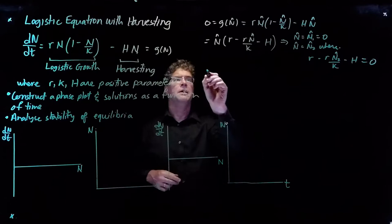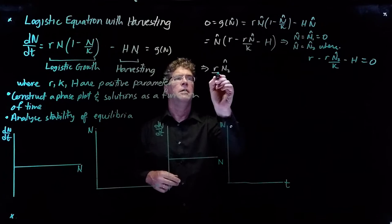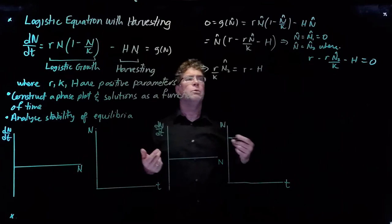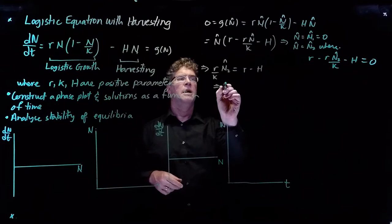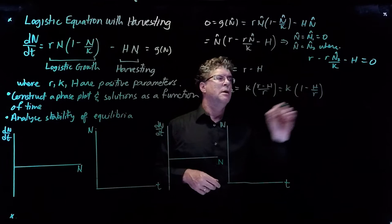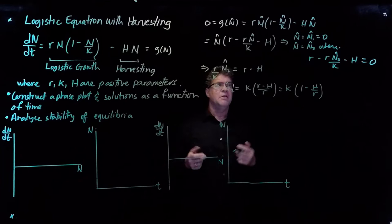Let's solve for n2-hat. That gives us r·n2-hat over K equals r minus h. Dividing through by r over K — equivalently multiplying by K over r — gives n2-hat equals K·(r minus h) over r, which equals K·(1 minus h over r). That's our second equilibrium value.